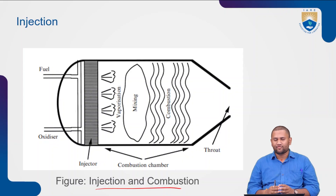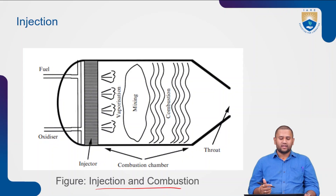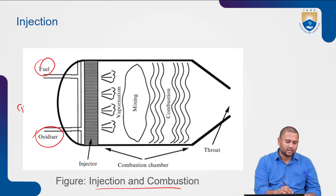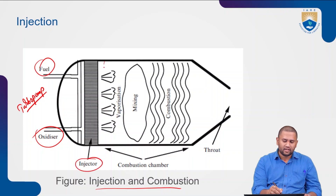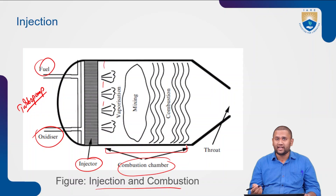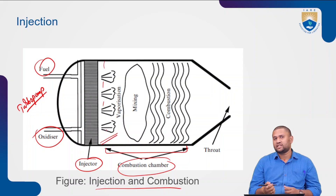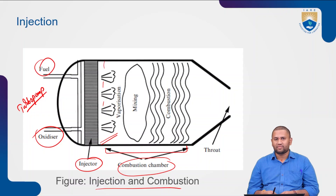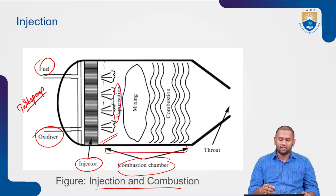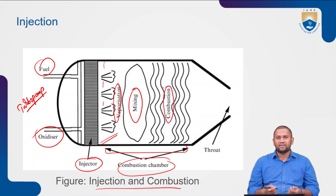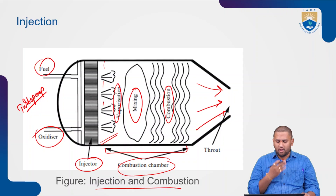The fuel and oxidizer come from the turbo pump and are sent through the injector into the combustion chamber. As soon as the liquid oxidizer and fuel mix, they tend to evaporate from liquid to gaseous phase — though some combinations may and others may not fully vaporize. A proper region is left for mixing of liquid fuel and oxidizer, then the mixture is combusted and sent towards the throat.